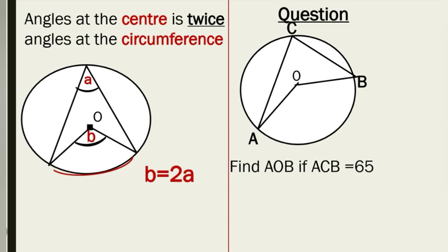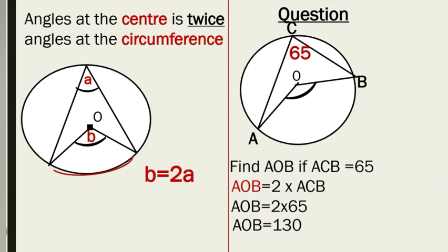For a quick example, we have a diagram with points A, B, C, and center O. The angle at C is 65 degrees. Since O is at the center and C is at the circumference, to get angle AOB we multiply the angle at C by 2. So angle AOB equals twice angle ACB, which gives us 130 degrees.